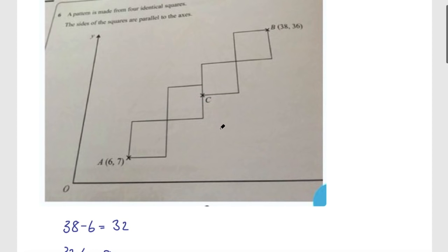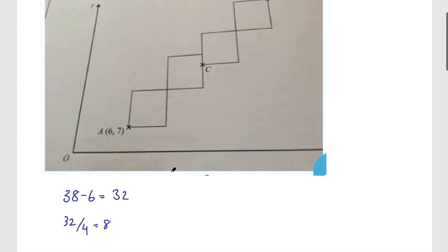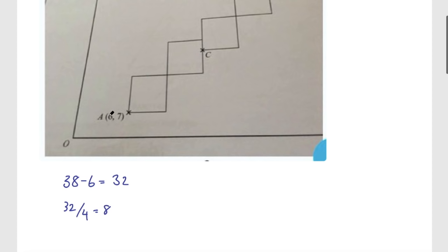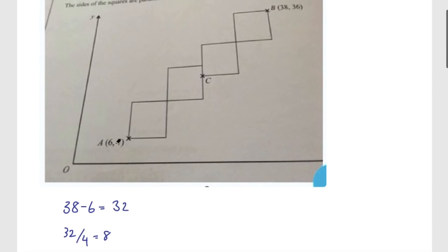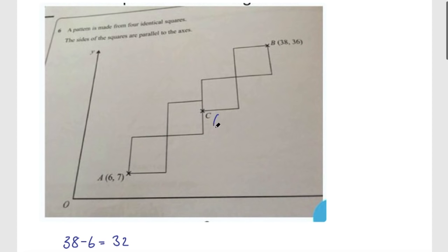Now I know the length of the side of the square, and I can find the x-coordinate of C because these squares are parallel to the axes. So the x-coordinate is going to be 8 times 2 plus 6. 8 times 2 is 16, plus 6, that's going to be 22.